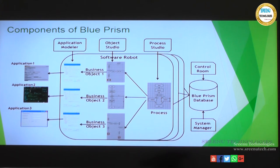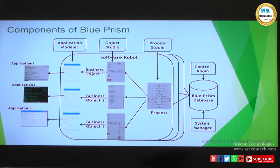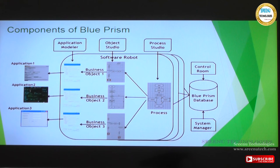Each application is mapped to one business object — a web application is mapped to business object one, a mainframe application to business object two, and desktop applications like Excel or Outlook to business object three. A software robot consists of one process and one or more business objects. Object studio is where we develop the business object, and process studio is where we develop the process.